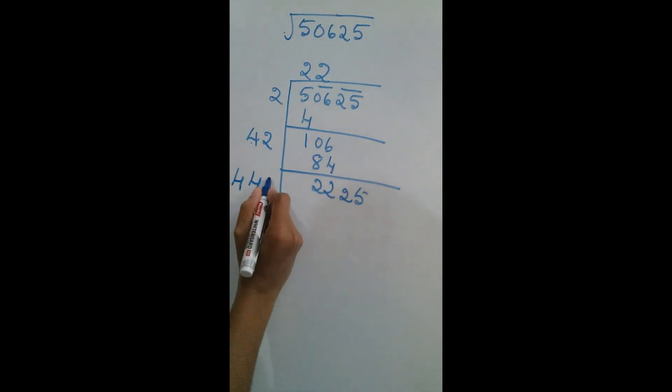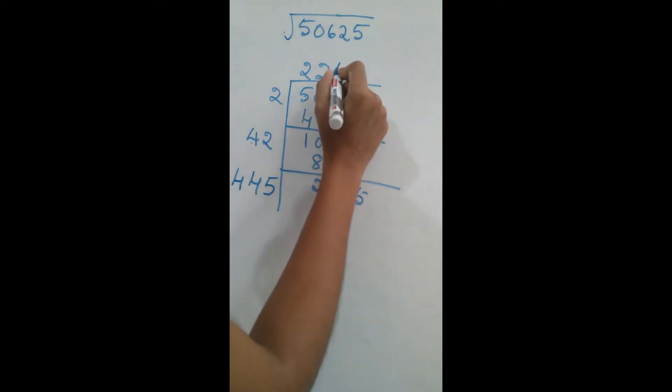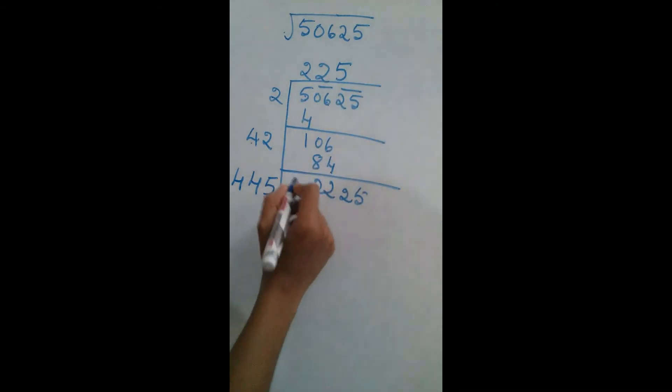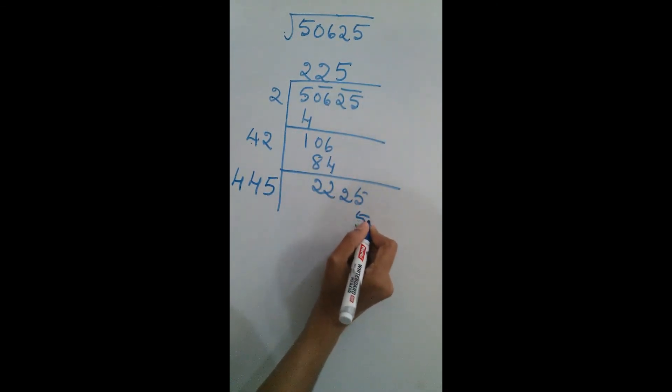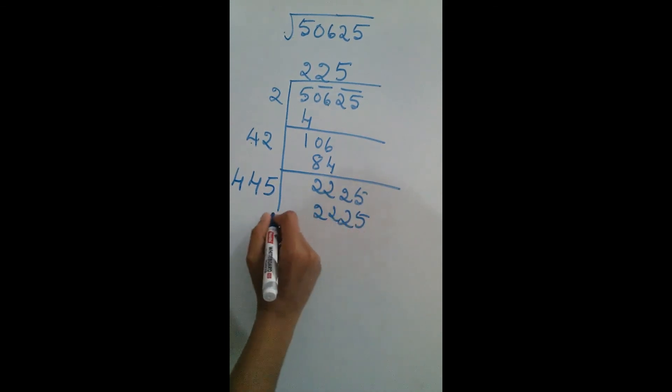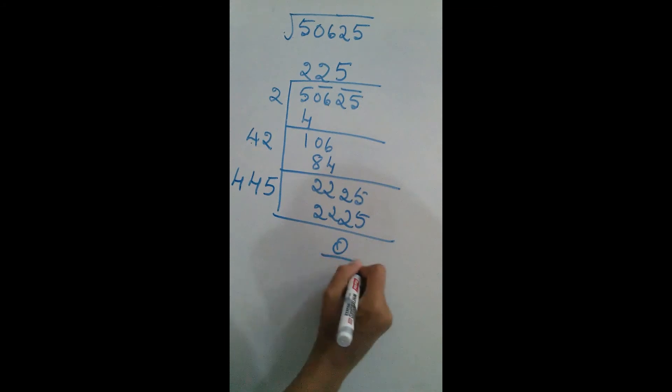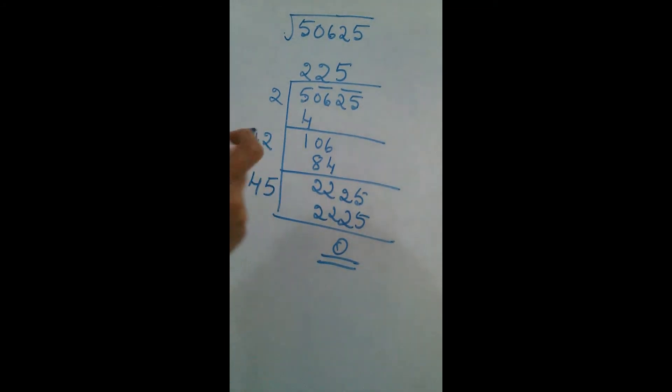Now I am adding 42 plus 2 is 44. Now I am multiplying with 5. 5 times 5, 6, 25. 22. Now we can tell square root of 50,625 is 225.